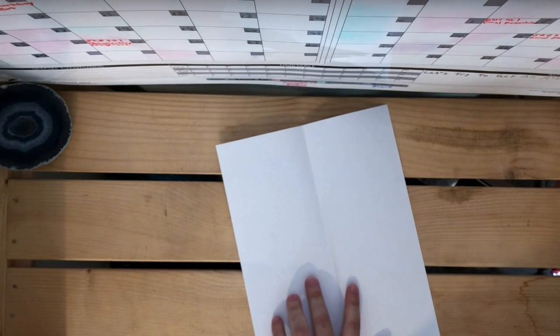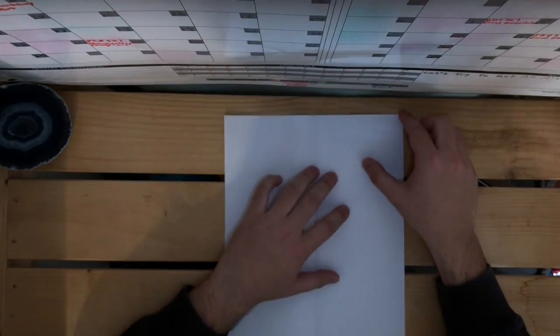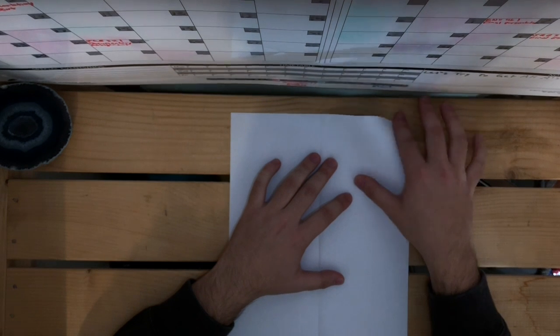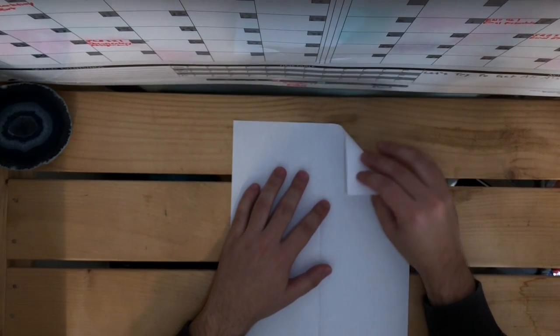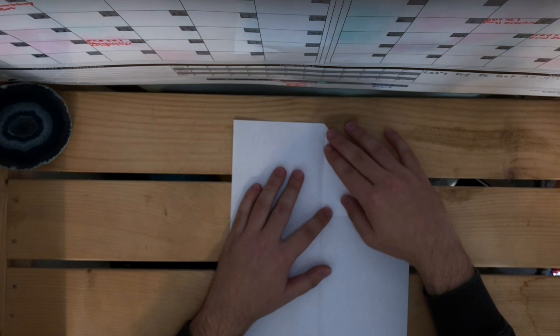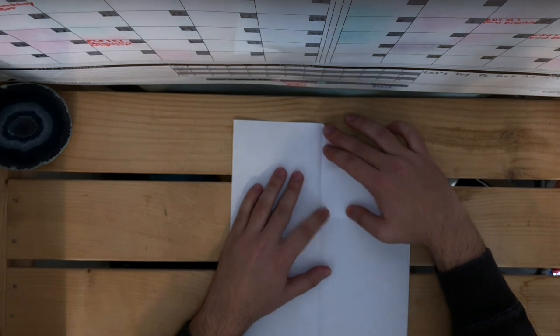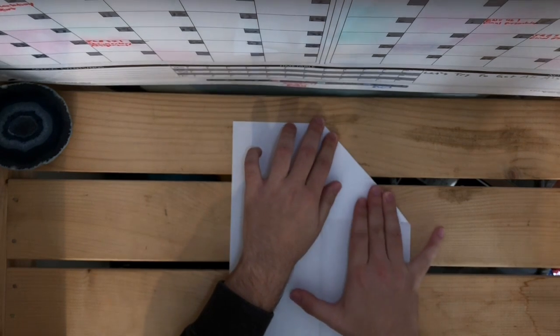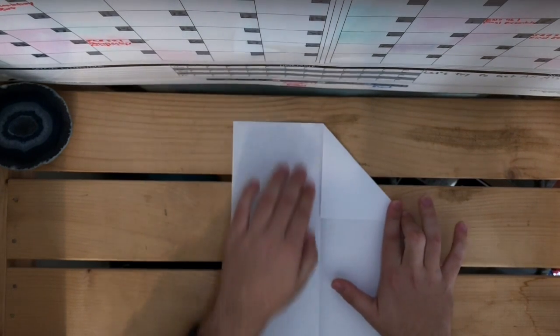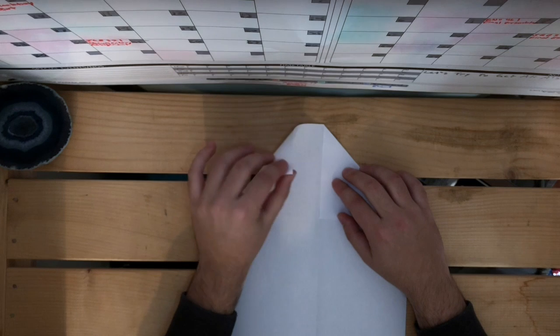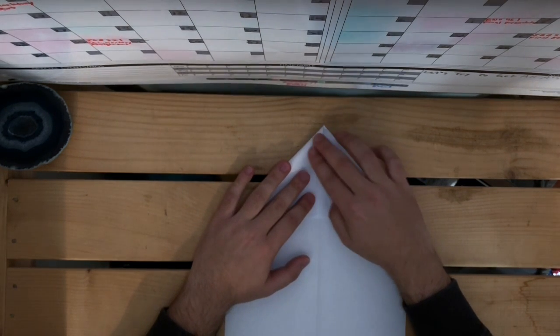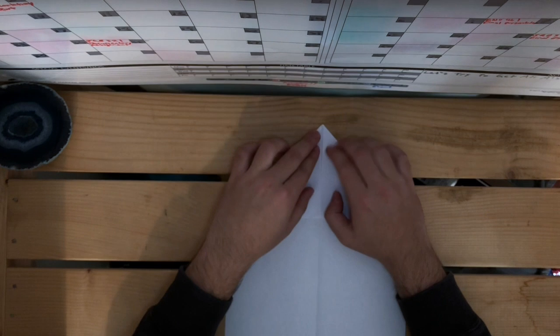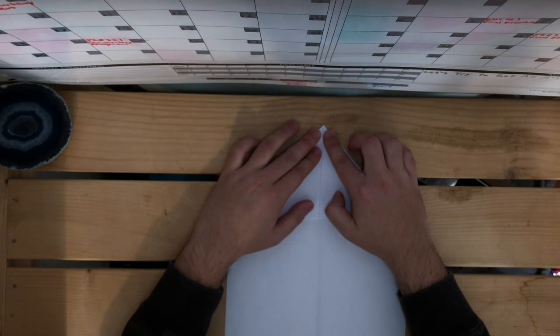The next step is to take these corners here and fold them into the center like that, pressing down. Do the same with the other side. Fold it in. You want to get those points here as close together as possible.